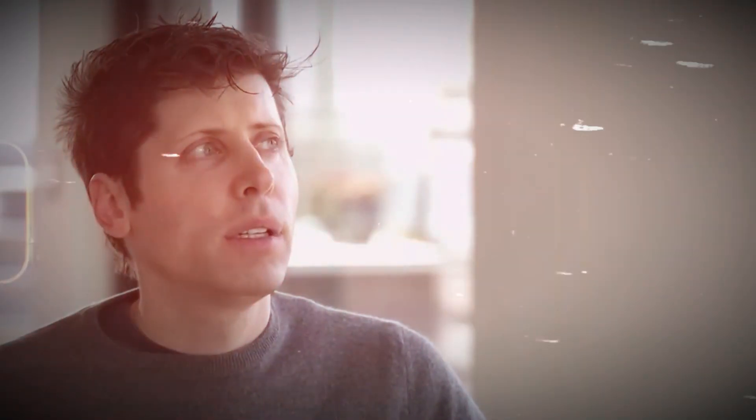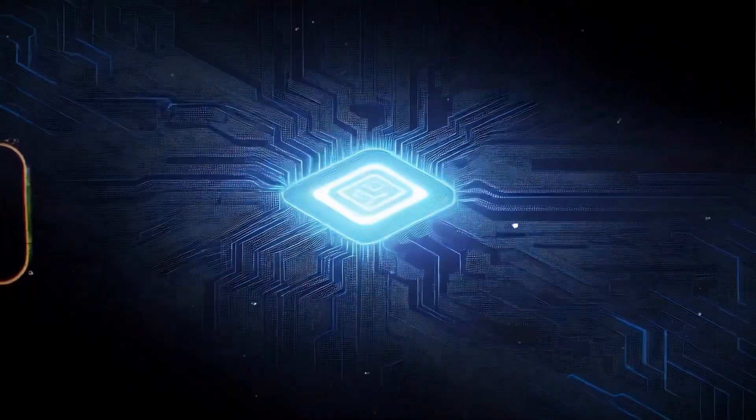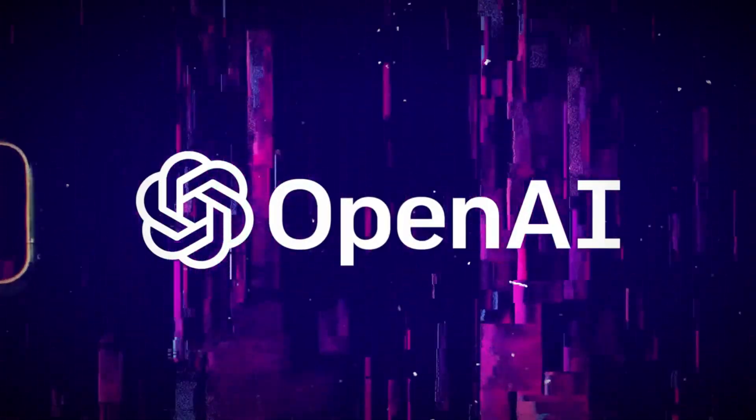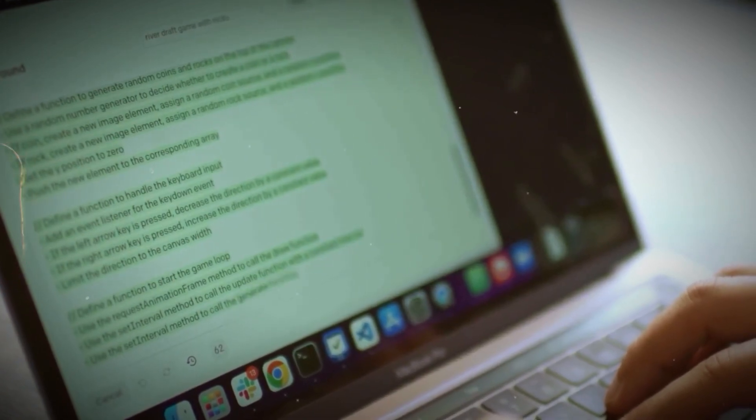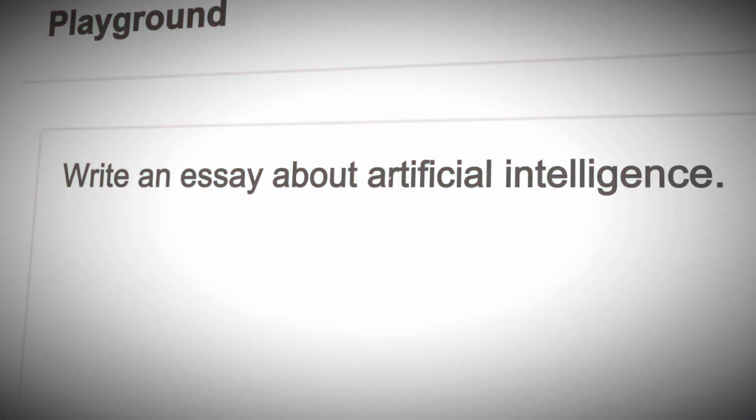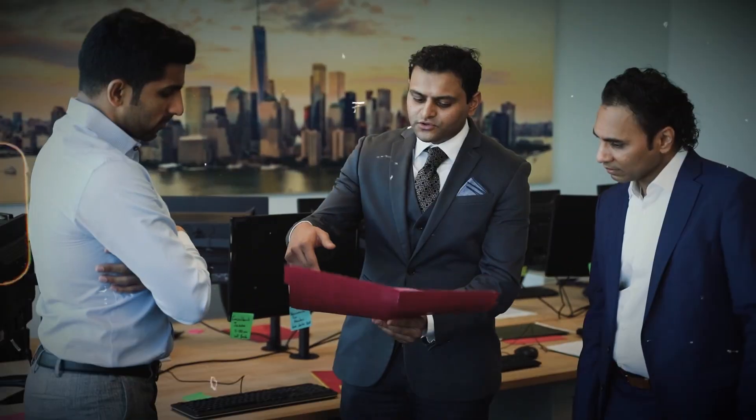Sam Altman's clarification regarding the CHIP effort underscores OpenAI's commitment to transparent communication and highlights the collaborative nature of the organization's decision-making process. By emphasizing that the CHIP effort wasn't a personal project but a collective decision deemed a strategic priority by the board, Altman aims to dispel any misrepresentation. This incident illuminates the challenges inherent in public perception of AI initiatives, where misinformation or misinterpretation can shape narratives. The importance of accurate reporting and a nuanced understanding of AI endeavors becomes evident as misrepresentations can contribute to misconceptions and fuel unnecessary concerns.